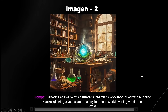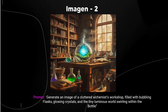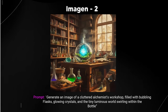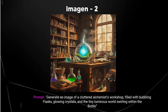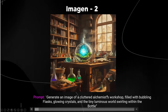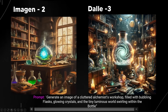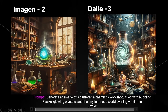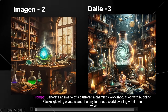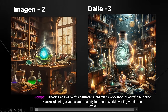Now let's look at comparisons with DALL-E 3. Remember this is Google's second iteration, whereas DALL-E 3 is technically the third iteration after DALL-E and DALL-E 2. For the prompt 'a cluttered alchemist workshop filled with bubbling flasks, glowing crystals, and tiny luminous worlds swirling within a bottle' — DALL-E 3 looks pretty cool, but Imagen2's nuances and understanding are actually better. For the photorealistic sunset portrait comparison, Imagen2 in terms of photorealism really wins — the way they trained the system produces particularly stunning results.